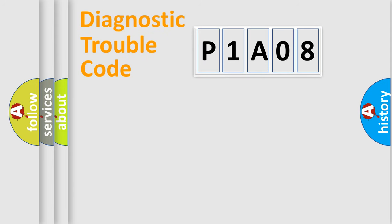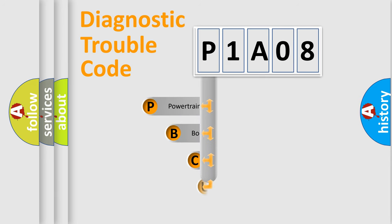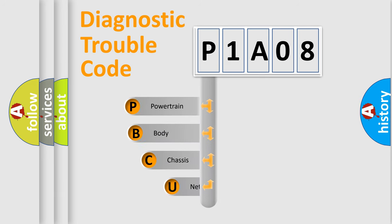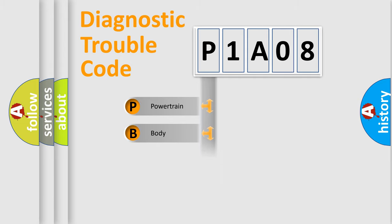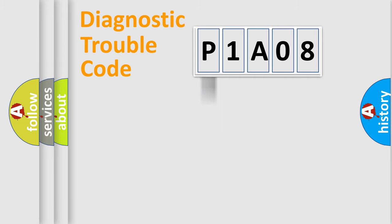Let's do this. First, let's look at the history of diagnostic fault code composition according to the OBD2 protocol, which is unified for all automakers since 2000. We divide the electric system of an automobile into four basic units: Powertrain, Body, Chassis, and Network.